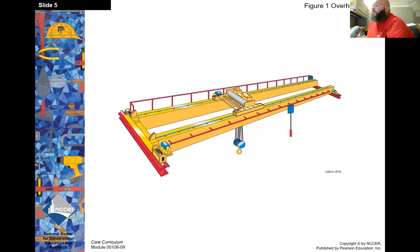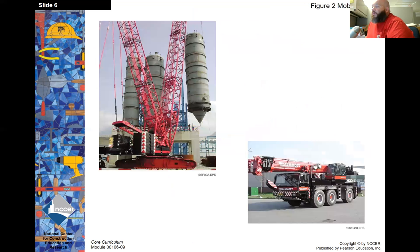Here are pictures of different types of cranes. This is an overhead crane that would generally be in a shop building. We have a track crane on the left — these cranes are usually moved in pieces. And a truck crane on the right, which can be driven to the site, the lift performed, and then driven back to the storage area.